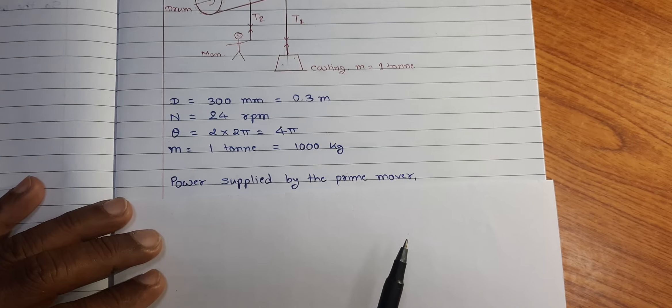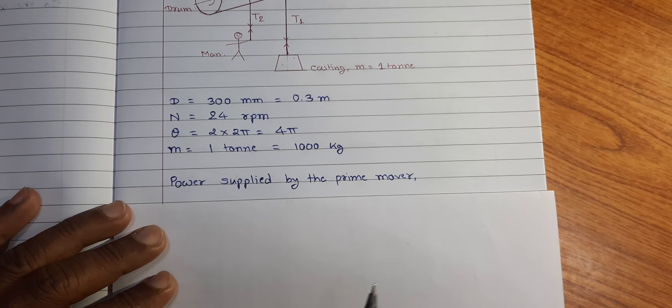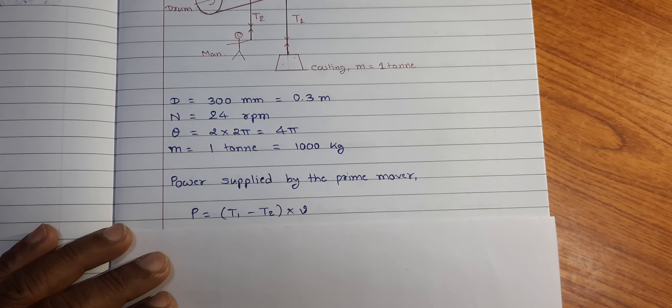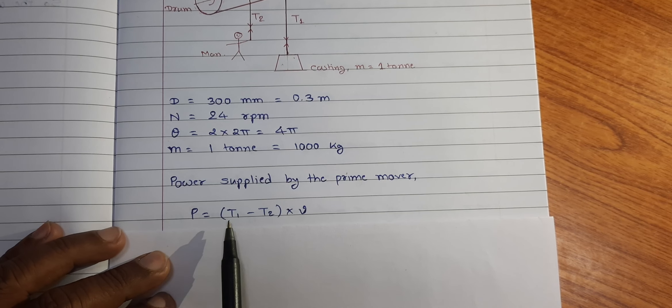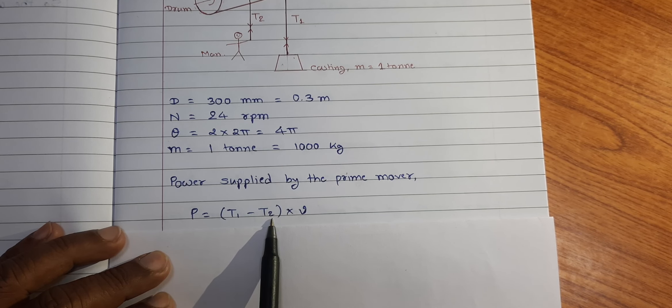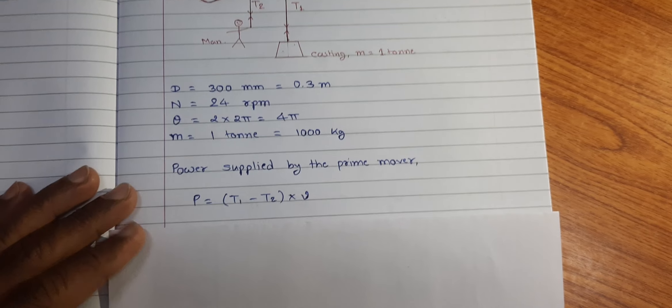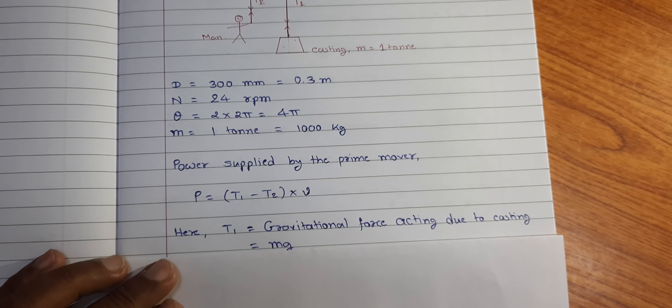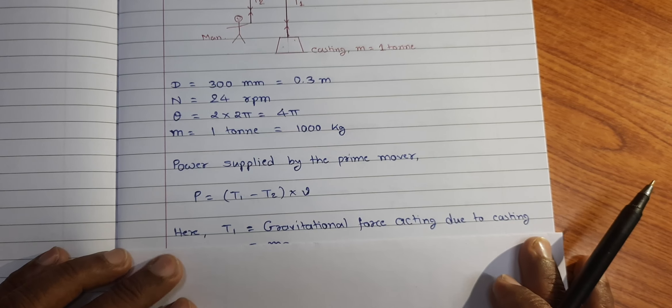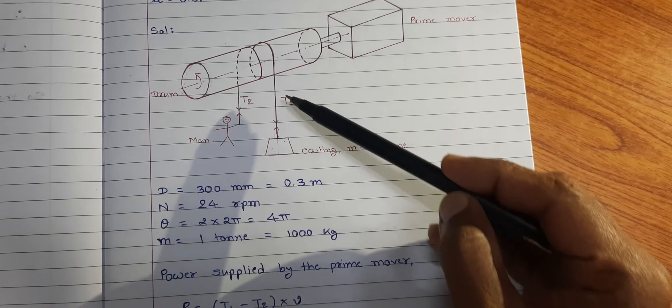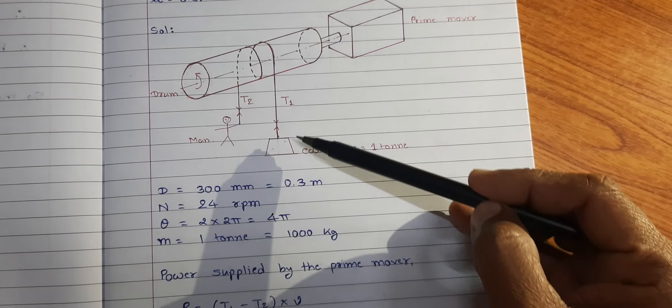Now, power supplied by the prime mover, so it can be written P is equal to difference of 2 side tension, tight side tension T1 minus slack side tension T2 into peripheral velocity of the drum V and here T1 is nothing but the gravitational force acting of the casting.